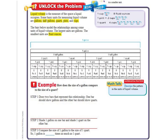So, 12.4 is all about customary units of liquid volume. In other words, ways that we can measure liquids, things that you can pour. Liquid volume is the measure of the space that a liquid occupies. Some basic units for measuring liquid volume are gallons, half gallons, quarts, pints, and cups. The bars below model the relationship among some of the units of liquid volume. The largest units are gallons. Think of a gallon of milk. The smallest units are fluid ounces.